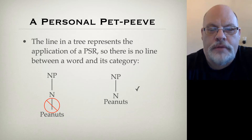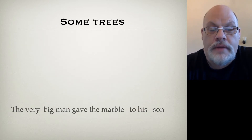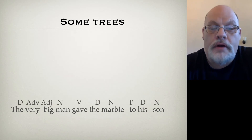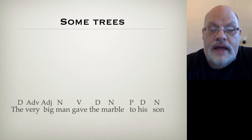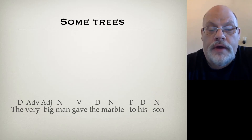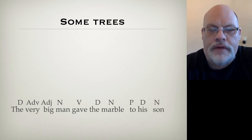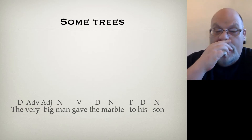Let's do some practice. Here's our sentence: 'The very big man gave the marble to his son.' Your first step is to identify the parts of speech. The is a determiner, very is an adverb, big is an adjective, man is a noun, gave is a verb, the is a determiner, marble is a noun, to is a preposition, his we'll treat as a determiner — it's a possessive pronoun and we'll come back to that later — and son is a noun.